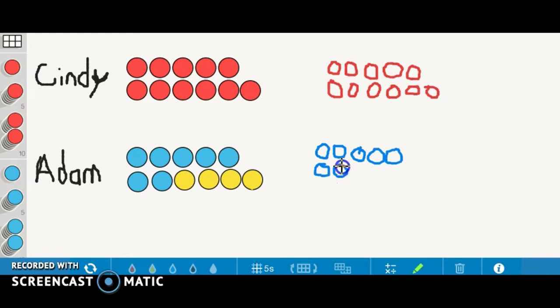We can see that if I add on to Adam's stickers, we can count up in order to match what Cindy has. We counted up to 11 by placing more stickers on Adam's side to equal the same amount that Cindy has. We saw that the difference was 4 stickers.